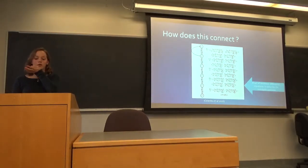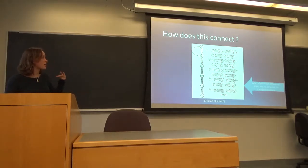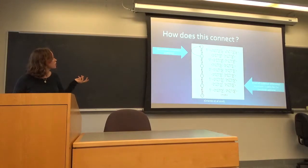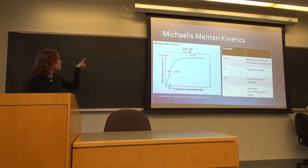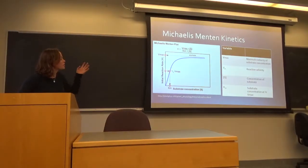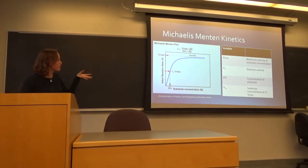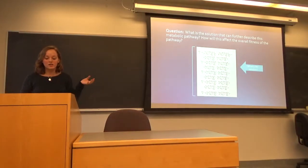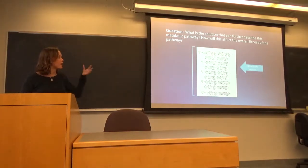At the lab at Temple, one of Peter's collaborators created this pathway using a software called Capazy, describing the pathway. We wanted to figure out the analytical solution — that rate — to see how the fitness of evolution changes over time. Each of those equations is in the form of the Michaelis-Menten kinetics equation, which is made up of different elements: the concentration of the substrate, the Km (which is the substrate concentration at half the Vmax), and the Vmax (which is the maximum velocity of the substrate concentration). The big question was: what is that analytical solution, and how does it affect the overall fitness in the pathway?